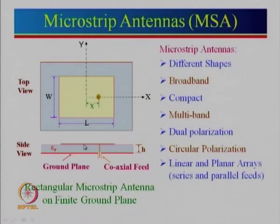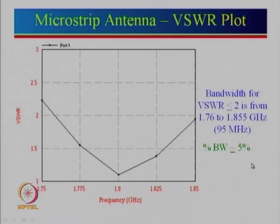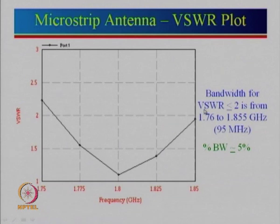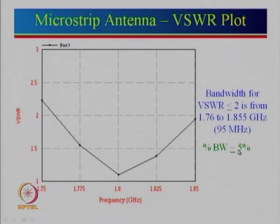The microstrip antenna is a very simple configuration. We have a ground plane on one side and a metallic patch on the other side, with a feed point. We designed an example antenna at about 1.8 gigahertz. This is how the VSWR varies, and we define bandwidth for VSWR less than 2. From 1.76 gigahertz to about 1.855 gigahertz, the total bandwidth is about 95 megahertz, which is a percentage bandwidth of 5 percent.